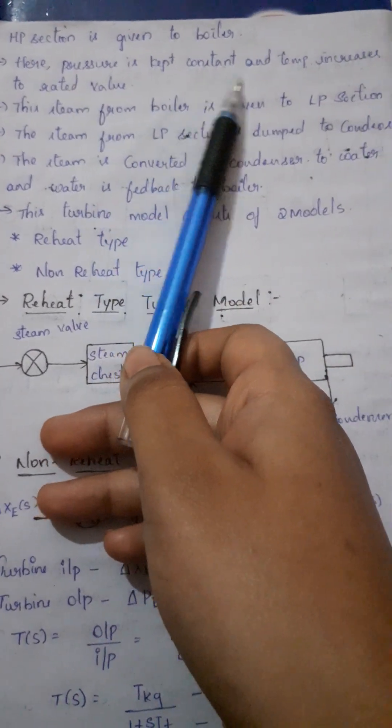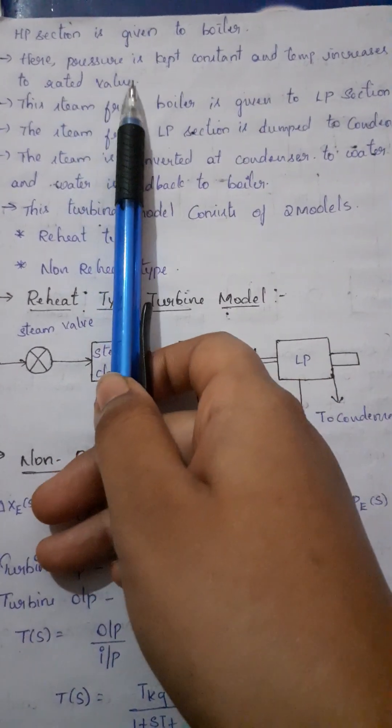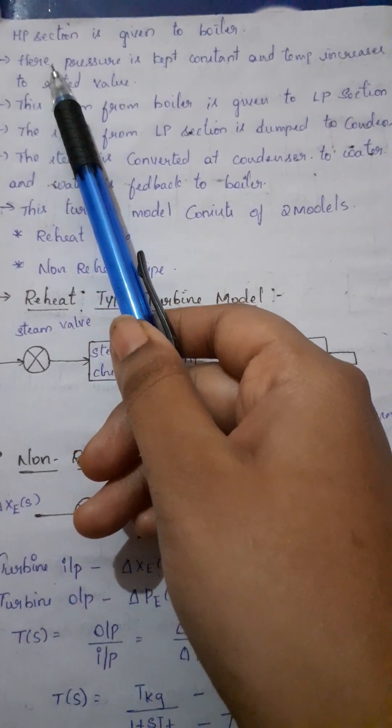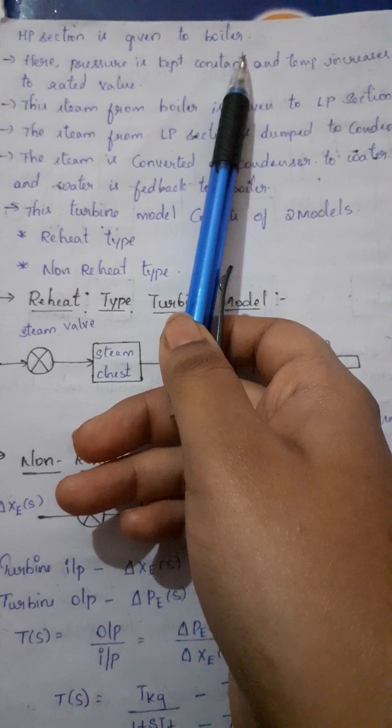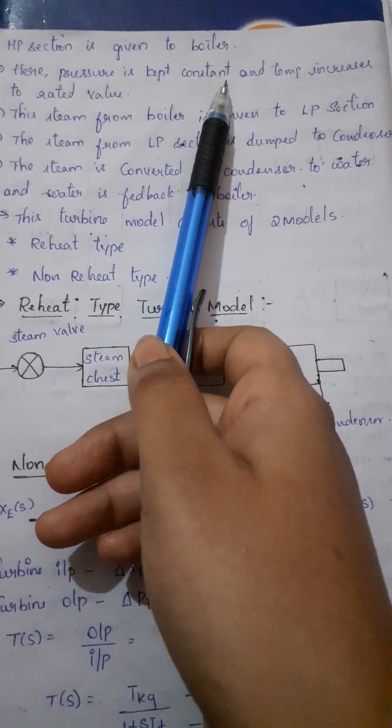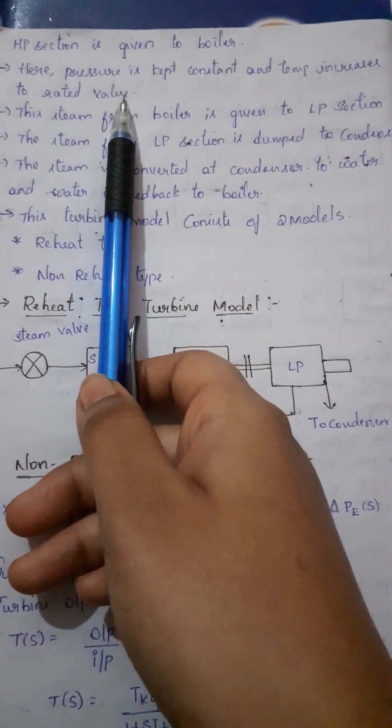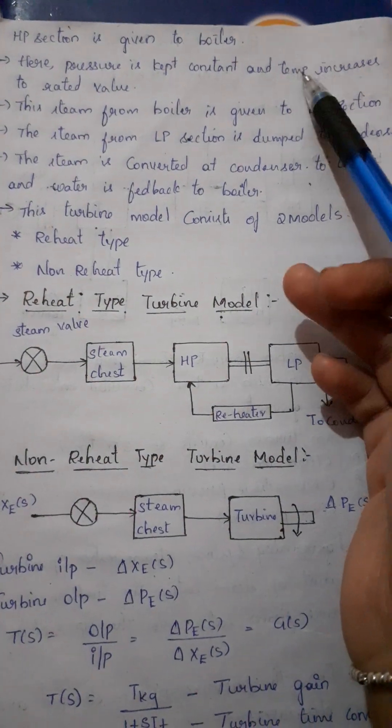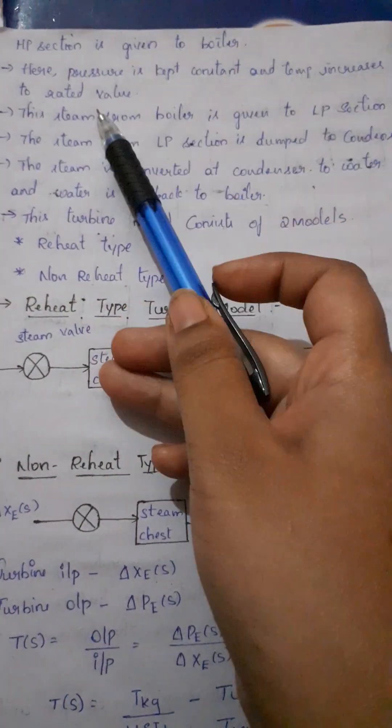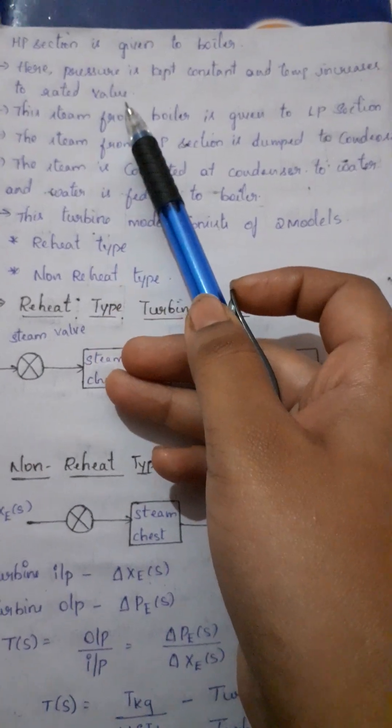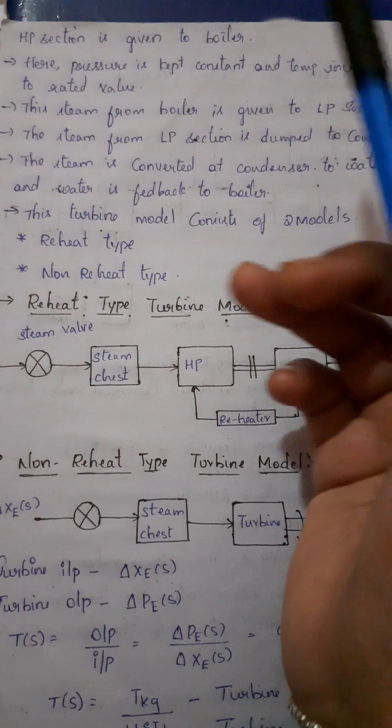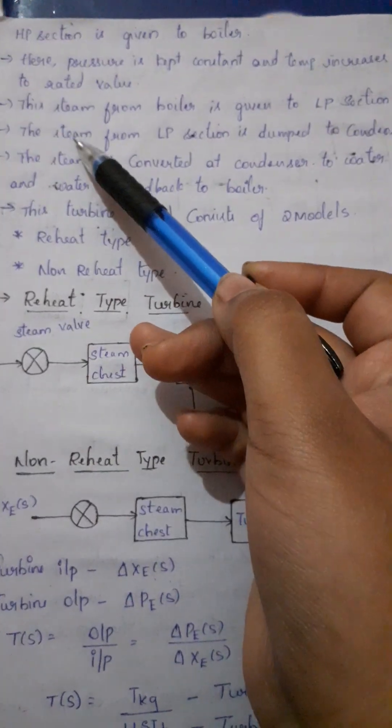Here pressure is kept constant and temperature increases to the rated value. In previous conditions, temperature decreases to the rated value. But in these conditions, temperature increases to the rated value. As well as, the steam from boiler is given to the LP section. Here we have a boiler and steam from LP section.